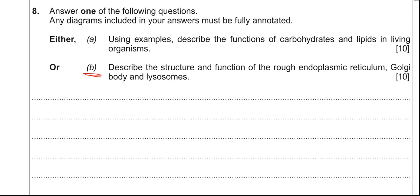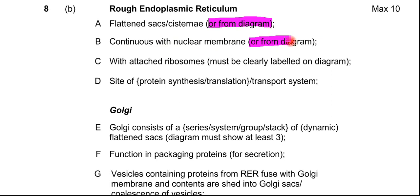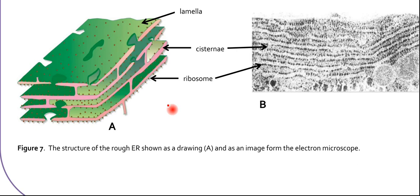For this one, the examiner will allow some diagrams, but I'll explain that as I go through the mark scheme. First off, this is what the examiner wanted for the rough endoplasmic reticulum: flattened sacs or cisternae — you could have used a diagram there. Also, it must be continuous with the nuclear membrane, or shown from a diagram. Here's a quick picture of what the rough endoplasmic reticulum looks like.